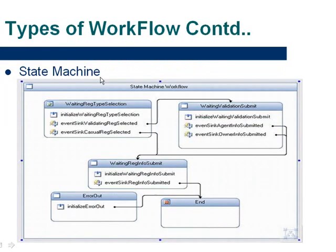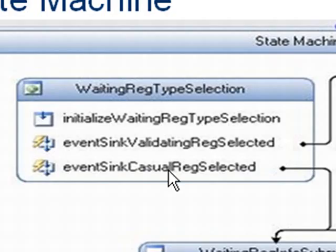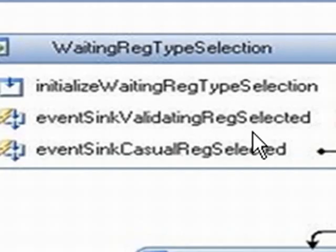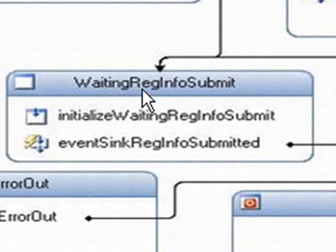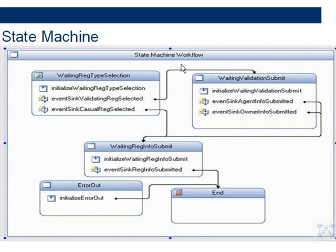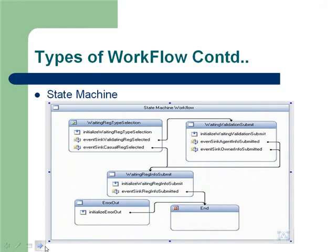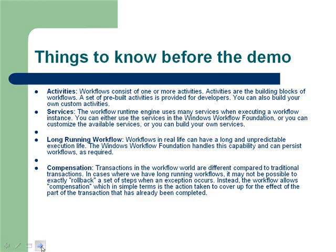Coming to the more real-time scenario: the State Machine. We learned about state machines back in engineering — generating regular expressions using state machines — and that is what is implemented here too. For example, when you're in 'Waiting Reg Type Selection', it would be redirected to 'Waiting Validation Submit' if the event 'EventSync ValidatingRegSelected' is invoked. If instead 'EventSync CasualRegSelected' is invoked, it redirects to 'Waiting Reg Info Submit'. So it goes to different states based on different outputs. These are the kinds of workflows offered by Workflow Foundation.